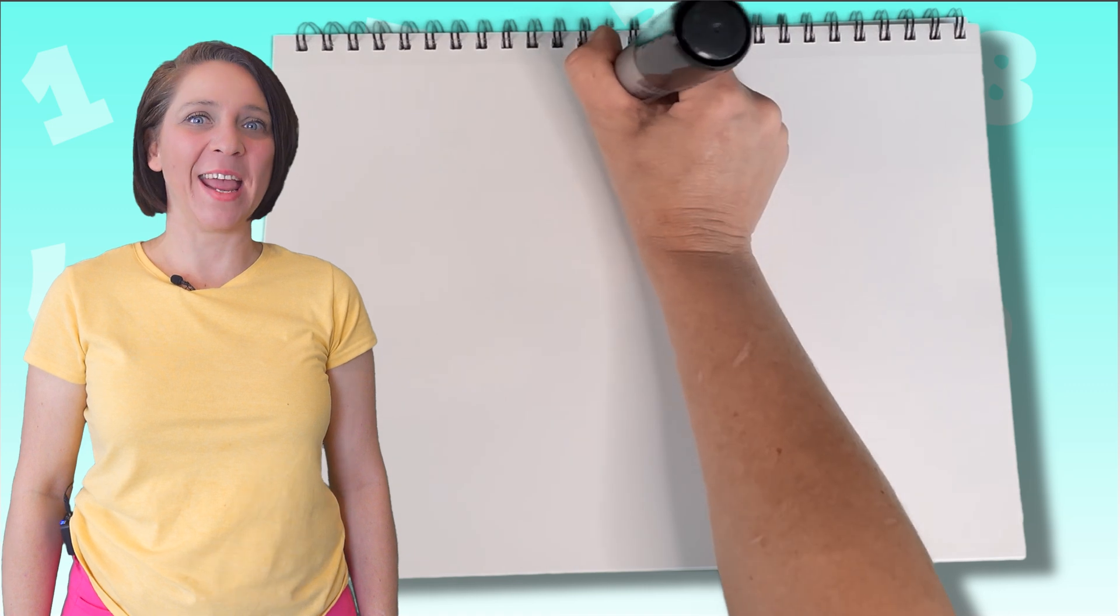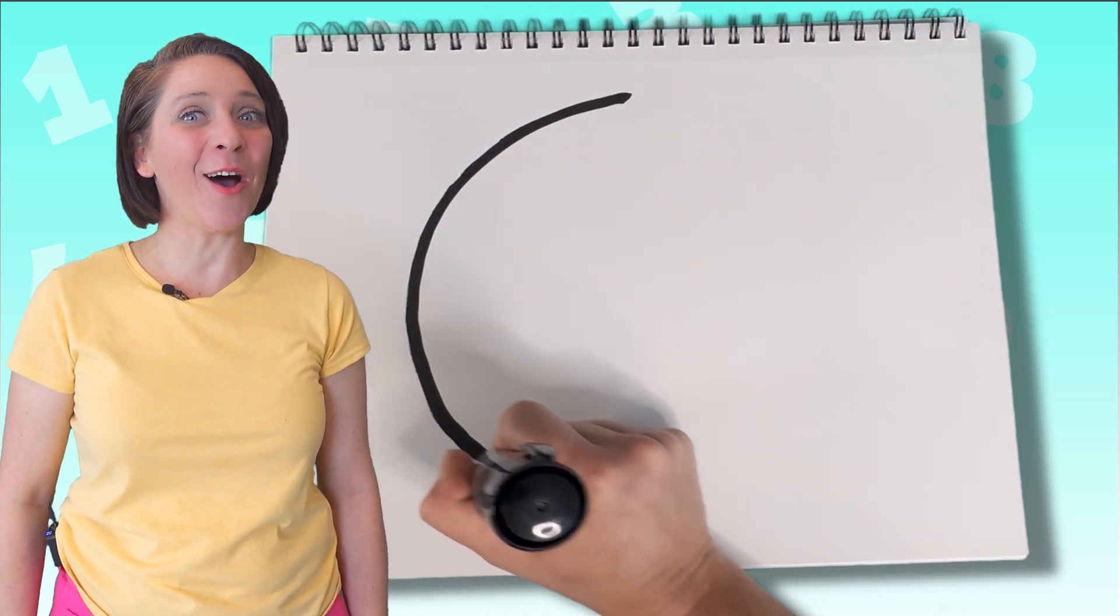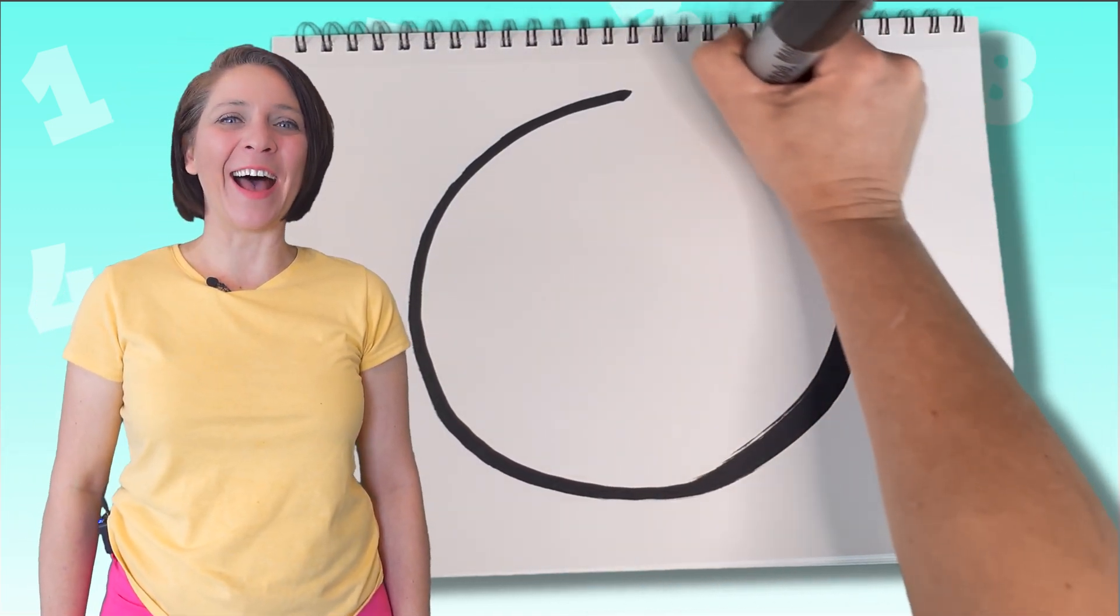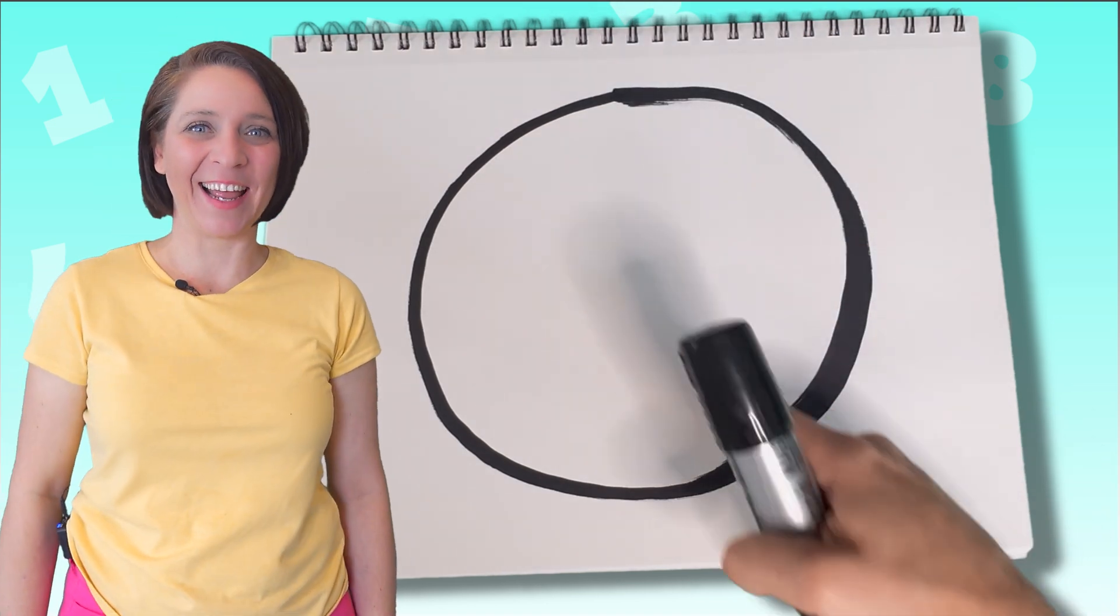Start with number zero. Make a circle like an O. Now you have number zero. Let's count to zero. Nothing happened. Nothing. Zero is nothing. We're good. Let's do the next number.